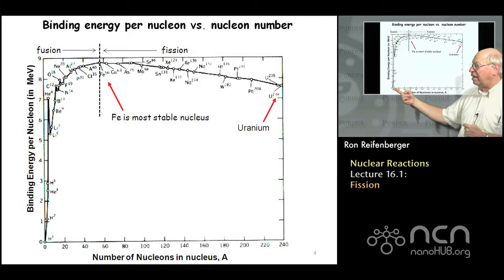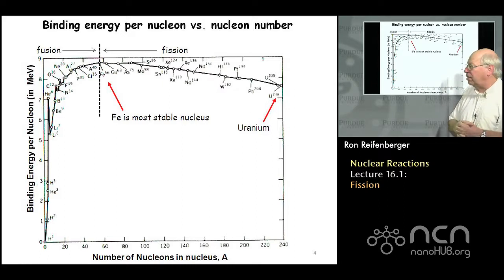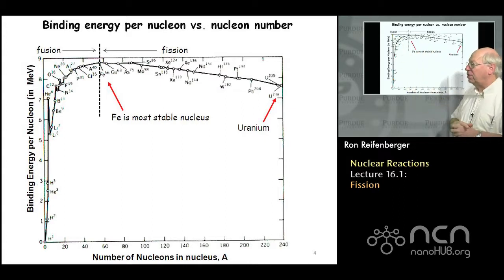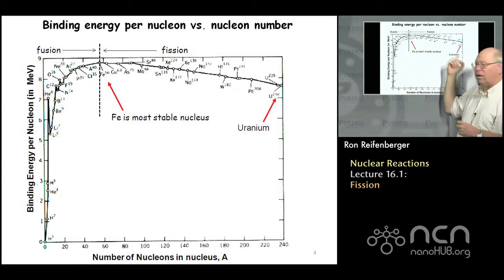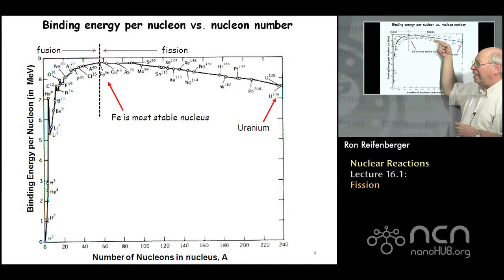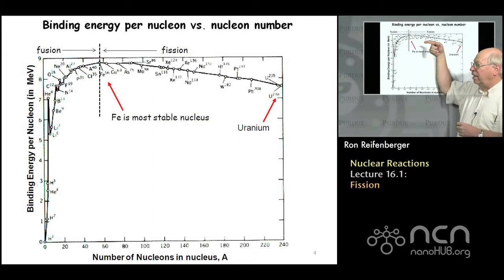The chart starts with hydrogen and ends with uranium, which is the heaviest naturally occurring stable element. Elements above uranium are unstable and eventually decay back into nuclei on this chart. Nuclei above iron on this chart are less stable than iron, so there's a natural tendency for them to return to the most stable configuration by fission—splitting apart to produce lighter nuclei until iron is reached.